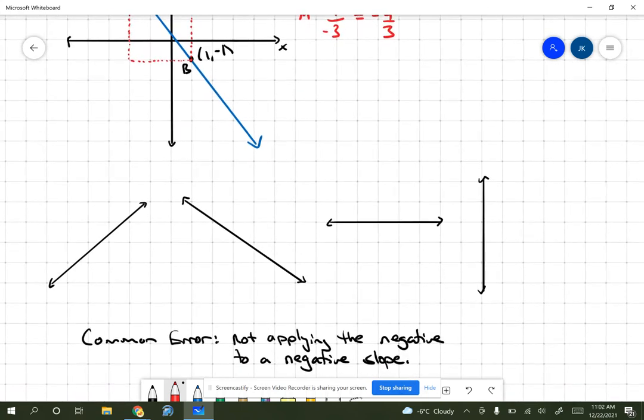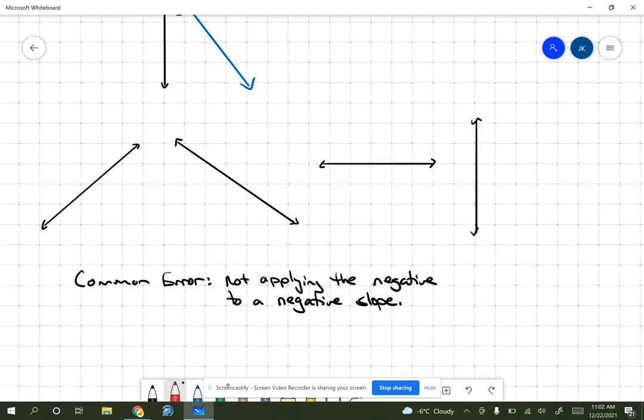Now, just really quickly to wrap this up, when a slope rises to the right, it's going to be a positive value. If the slope drops to the right, it's a negative value. If there is no change vertically between two points, the slope is zero.